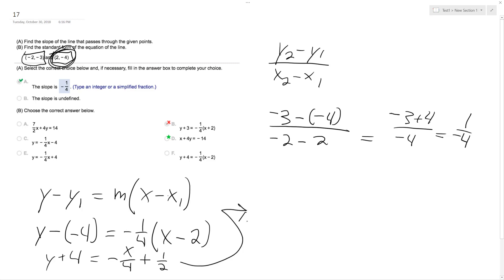So I get y is equal to negative 1 fourth x plus 1 half minus 4, which is minus 8 over 2.